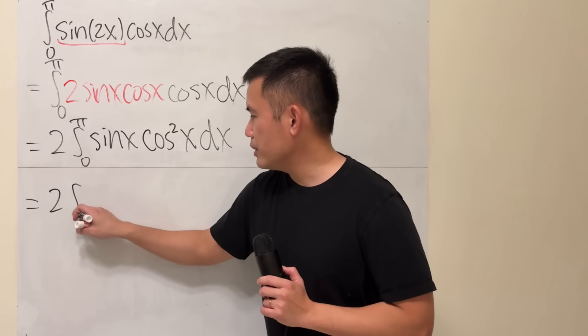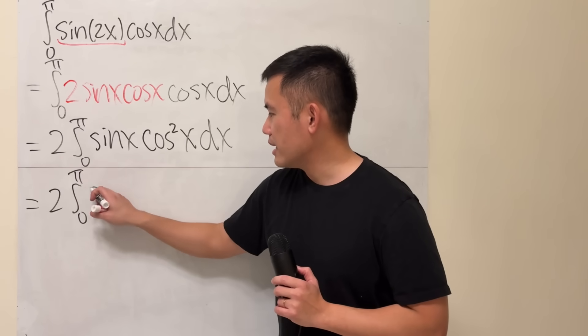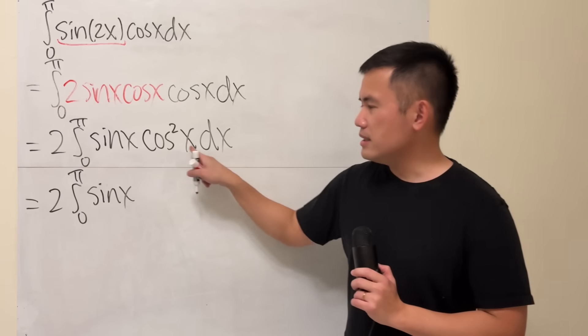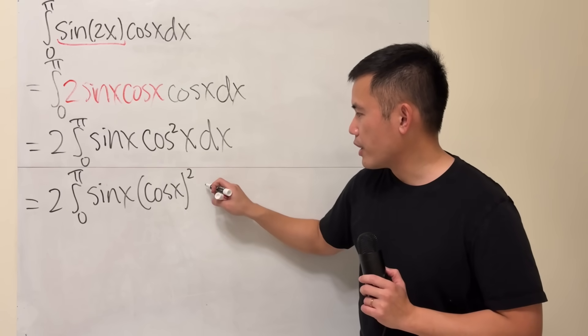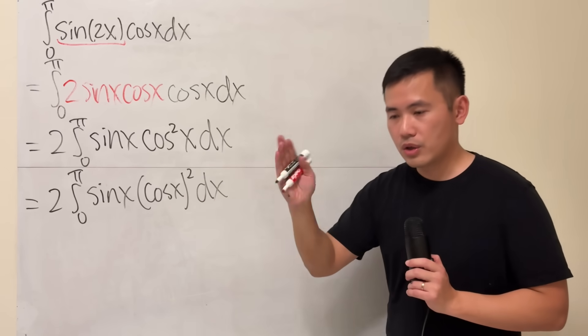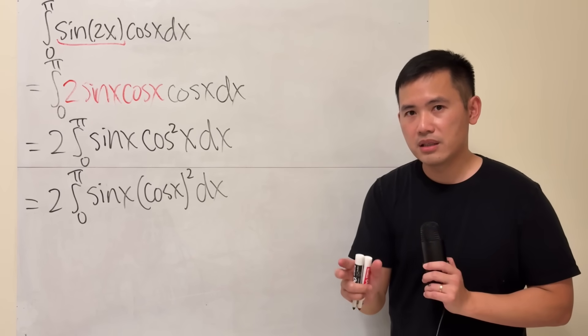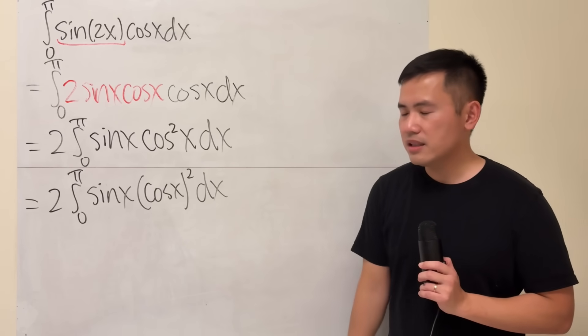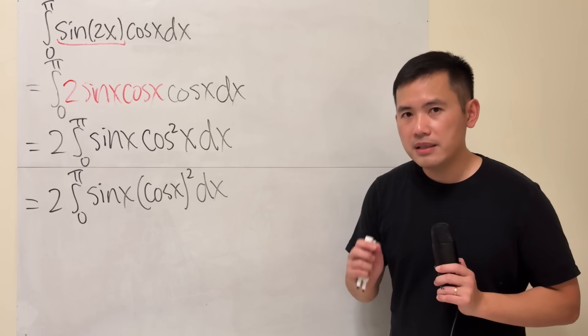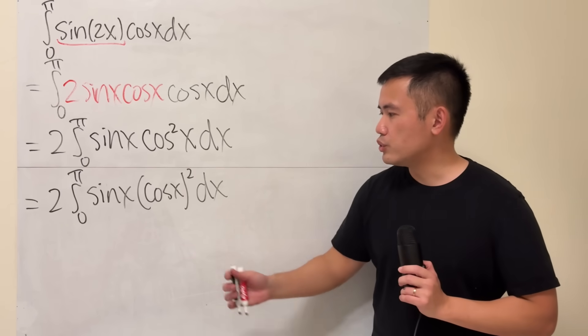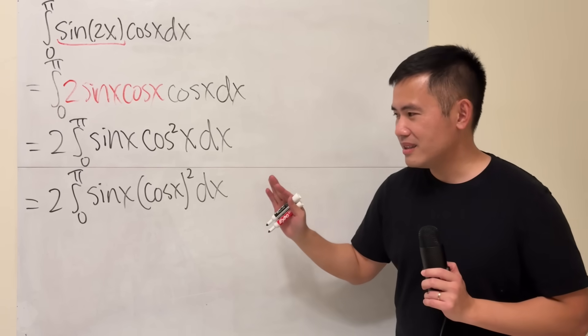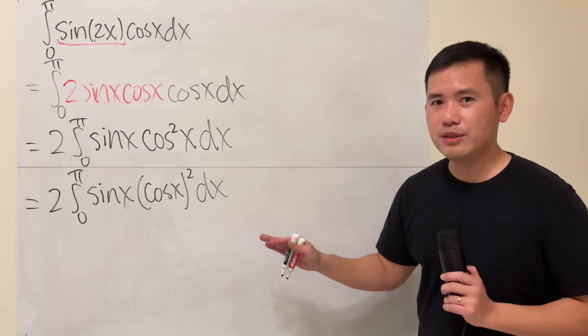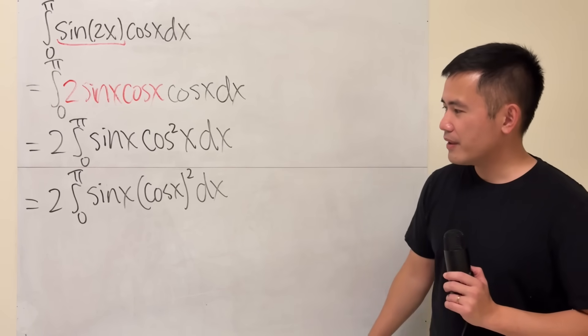Still write down 2 integral 0 to pi sine x, but this notation really means we have cosine x and then square like this: cosine x times cosine x. Once you write it down like this, I will tell you, in many situations the u is just the inside function. Not all the time though, but in this case, yes. In many situations, also yes.